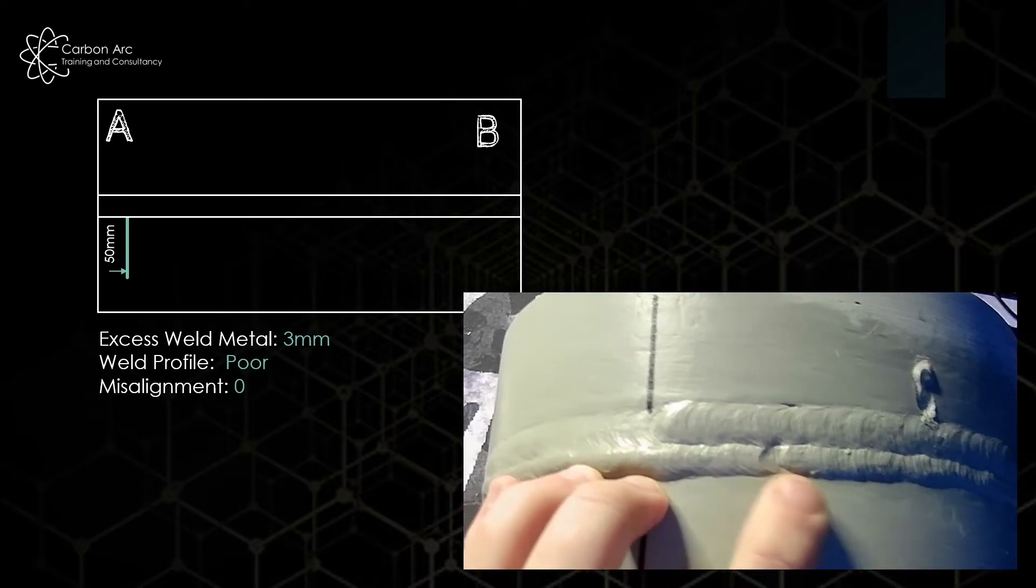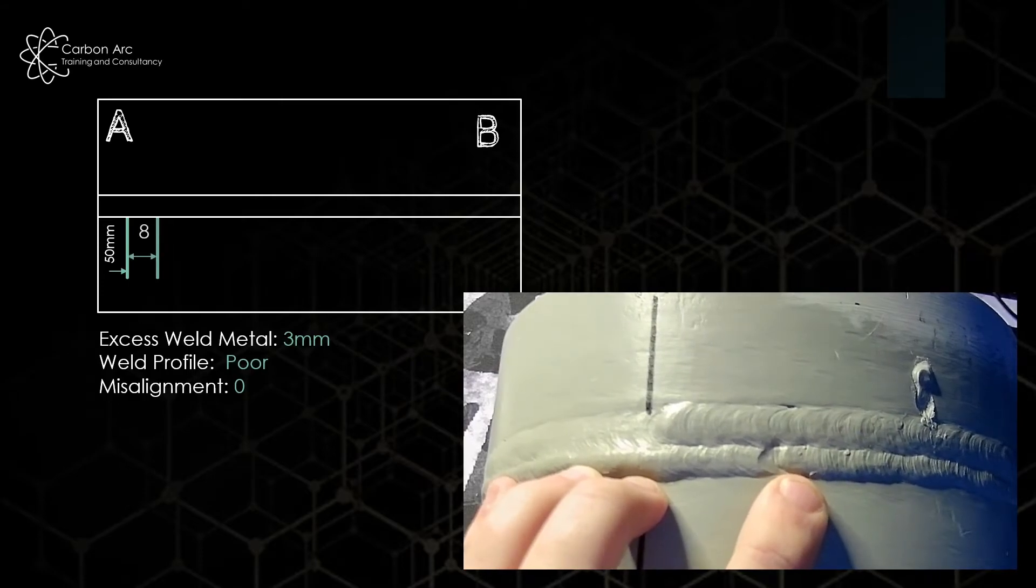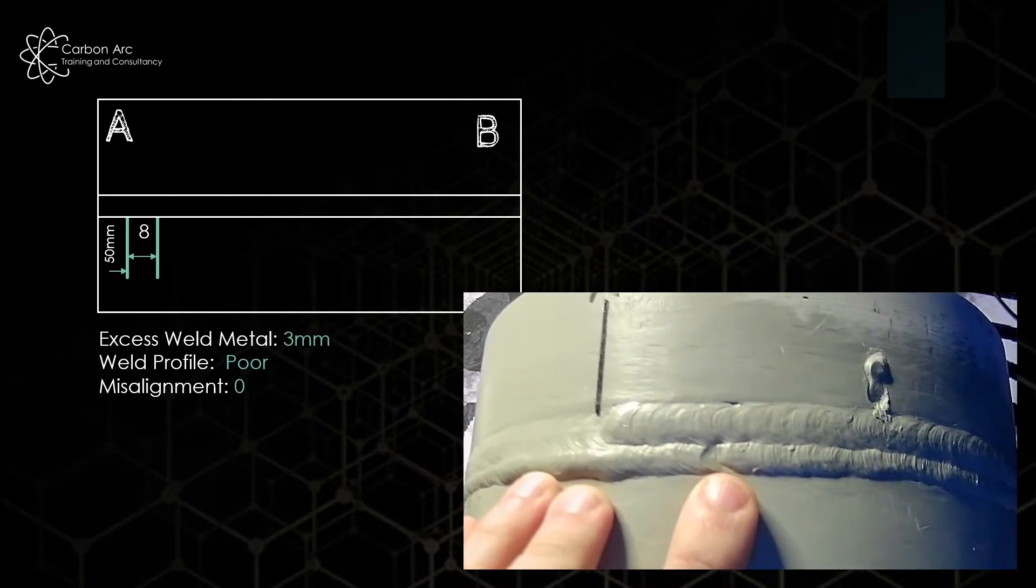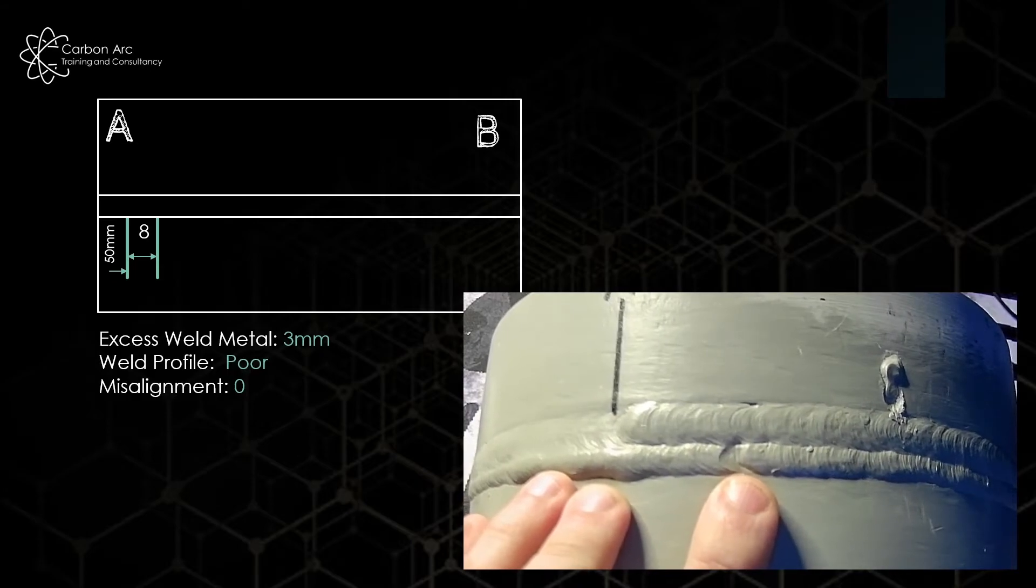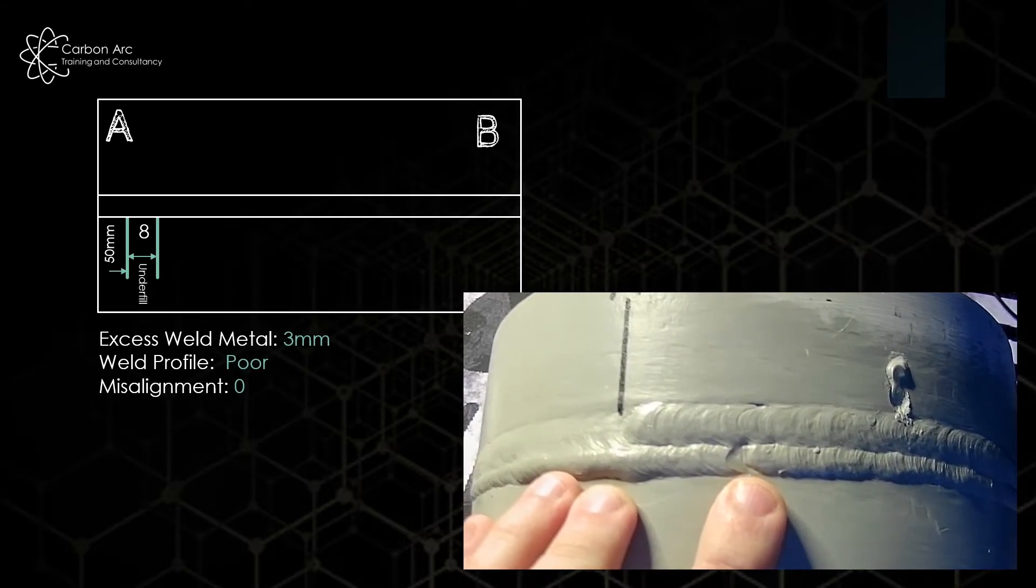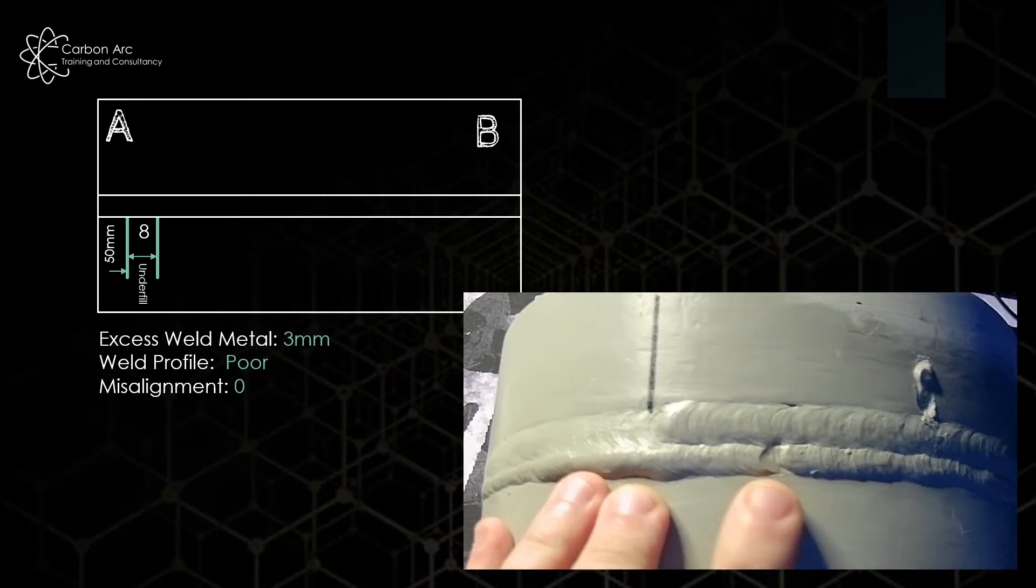I'm going to say that's 50mm from my datum to the start of that defect. Then I measure the length of the defect, and I'm saying it's 8mm long. And then, of course, I need to put the name of the defect that we're calling it. So there you go, I've got 8mm of underfill.